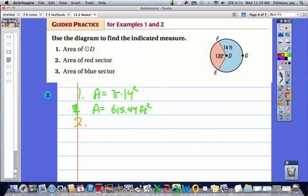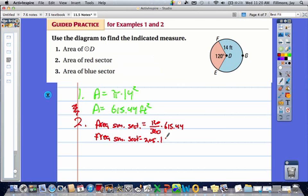For part two, we want the area of the red sector. We'll define the area of the red sector, which is the smallest sector in this case. It's going to equal the fraction, which in this case is 120 over 360, of the entire area. We already know the area is 615.44, so let's just use that. We'll multiply that times 120 over 360, which is actually one-third. So we could actually just multiply it times one-third or divide by three. The area of the small sector is going to equal about 205.15 square feet.